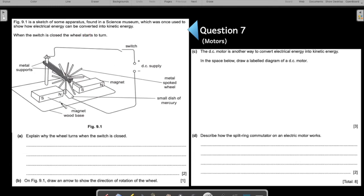When the switch is closed, the wheel starts to turn. So what is happening here? Clearly you can see two magnets and there is a spiky wheel kind of thing. Metal spoked wheels. So this is your wheel with metal spikes coming out of it, connected to a metal support.